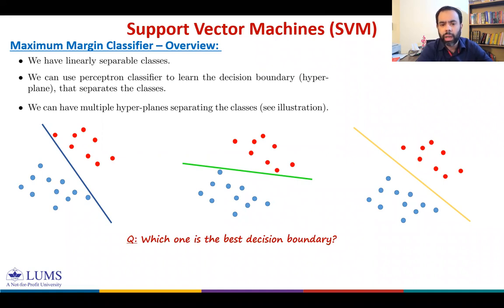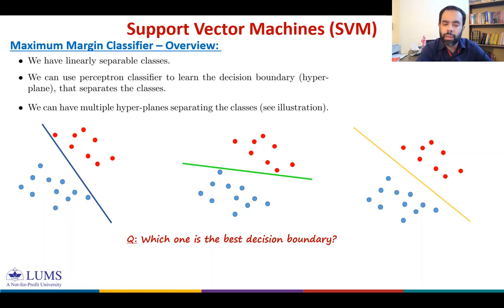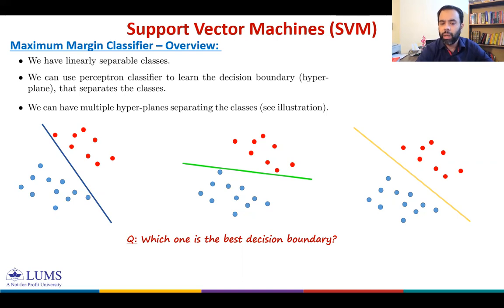Why? What is the rationale of this intuition? Recall we are learning this hyperplane from the training data. If we have made a small error in finding or estimating the boundary, jolting the yellow boundary in its perpendicular direction gives us the least chance of causing a misclassification relative to the green and blue lines. If the green and blue lines are jolted slightly in the perpendicular direction they will cause misclassification, so we have more room with the yellow line.